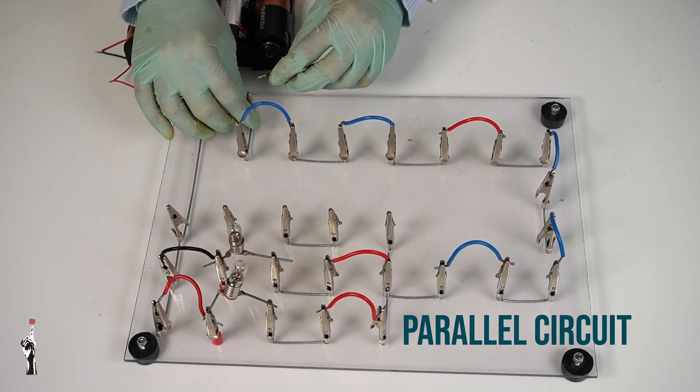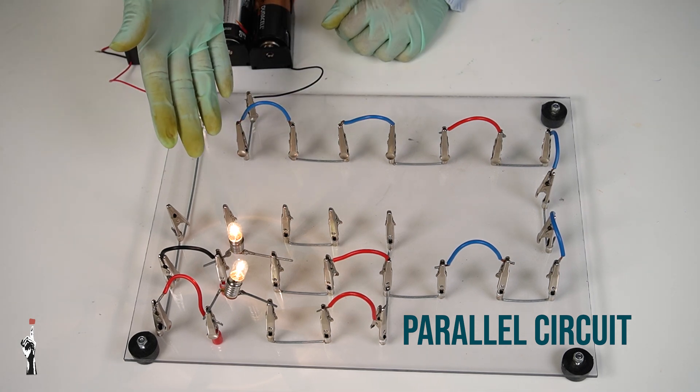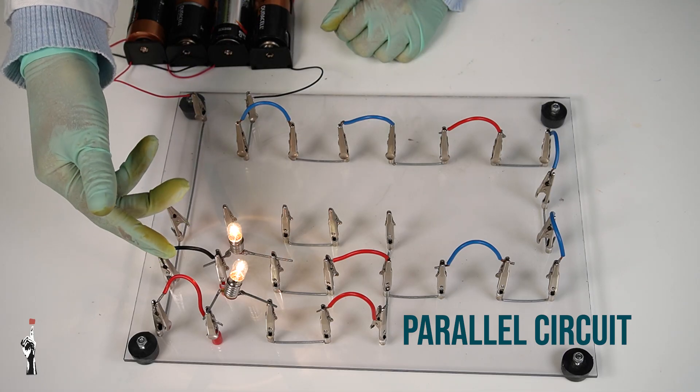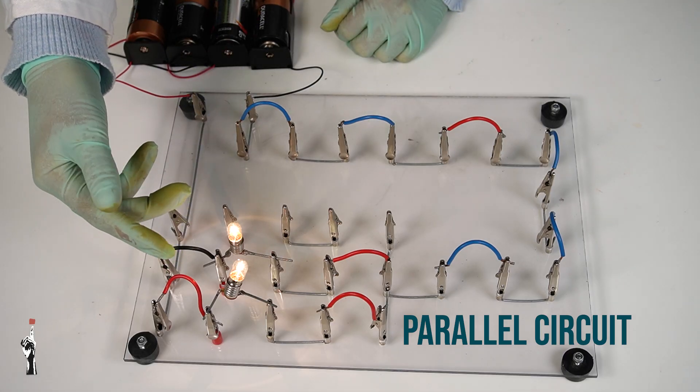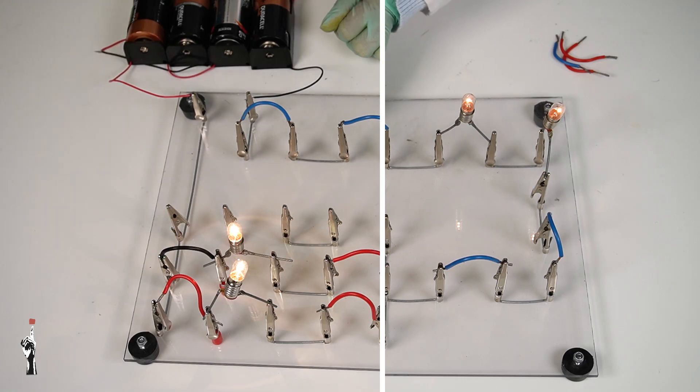So, what you're going to see this time is that even though there are the same two light bulbs as which they were in the series circuit, because they're parallel, they are both burning quite brightly, much brighter than they burned while they were in series.